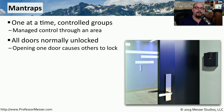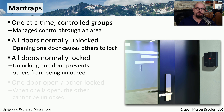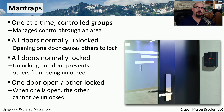One common configuration with man traps is that both doors are unlocked, and as soon as the first door is open, the other door locks, so you can only have one door open at any particular time. Or maybe all doors are locked, and as soon as one person badges in and unlocks that door, all other doors are prevented from unlocking until that door closes behind that person. The real key with a man trap is you never have both doors open at the same time — there's always going to be a controlled flow.